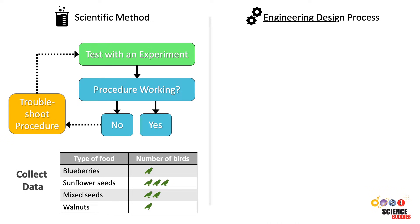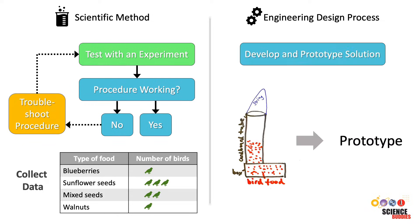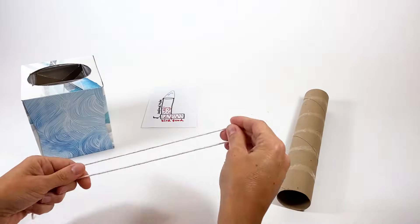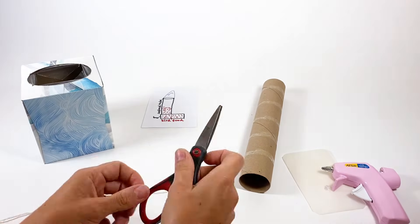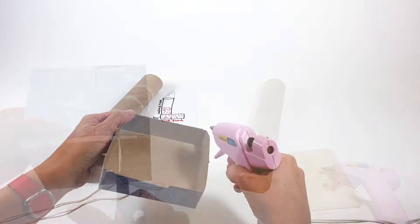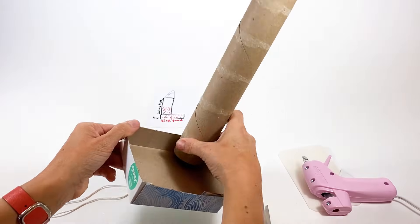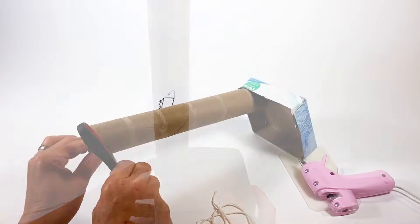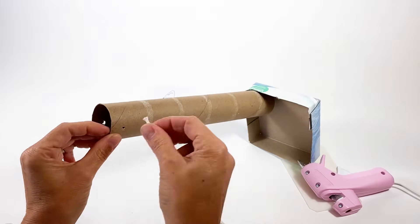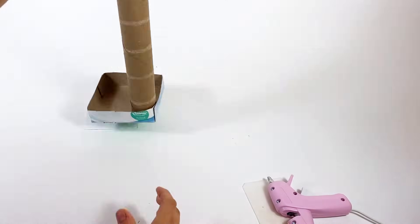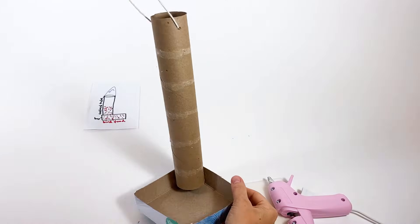In the engineering design process, after deciding which bird feeder design we want to try first, the next step is developing and building a prototype. This means we use our previous sketches or drawings of the bird feeder we want to build, choose the materials for each part of the design, and then build our first bird feeder prototype. We know we might need to make changes later — our prototype is just an initial build that will let us begin testing our product.